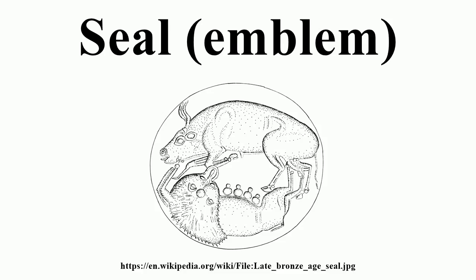Seals were used in the earliest civilizations and are of considerable importance in archaeology and art history. In ancient Mesopotamia, carved or engraved cylinder seals in stone or other materials were used. These could be rolled along to create an impression on clay and used as labels on consignments of trade goods, or for other purposes. They are normally hollow and it is presumed that they were worn on a string or chain round the neck. Many have only images, often very finely carved, with no writing, while others have both.